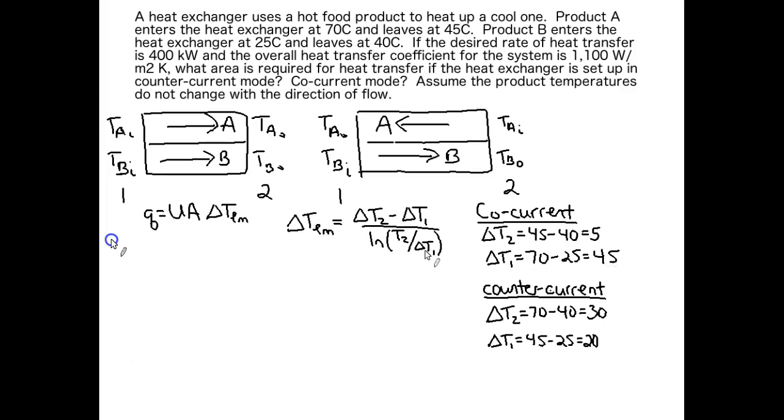The magnitude of that number would be exactly the same as if we had delta T2 being 45 and delta T1 being 5. So no worries about that.